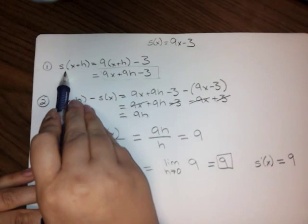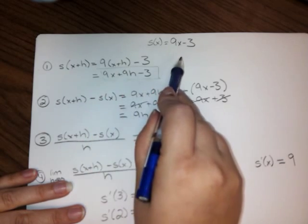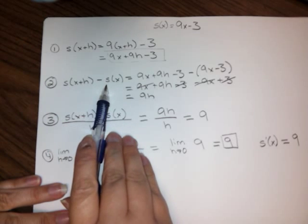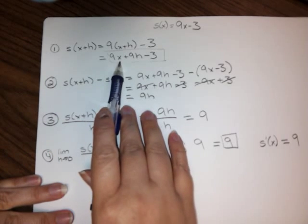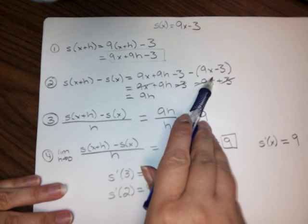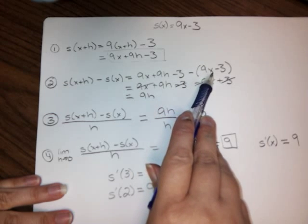So, the four-step process says find s(x + h), which we did by plugging x + h into our original function. Step 2 says find s(x + h) - s(x). Well, we already found s(x + h), so we could just copy that down, and then we subtracted the original function, making sure to put it in parentheses so that we distributed minus signs correctly.